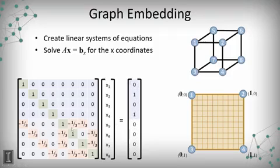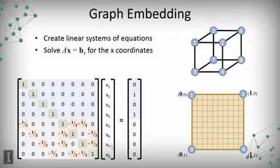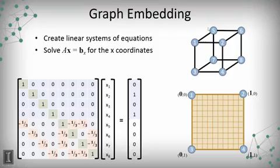Row five of the system says: x5 minus one-third times x1, minus one-third times x6, minus one-third times x7 equals zero. That sets up a linear equation so that wherever nodes six and seven are positioned, they impact node five. We do that for rows five, six, seven, and eight corresponding to those nodes. When we solve this system, we get positions for nodes five, six, seven, and eight that satisfy those relationships.